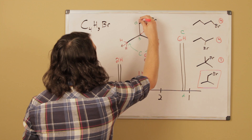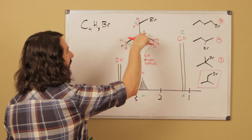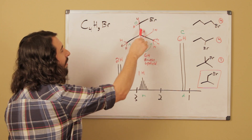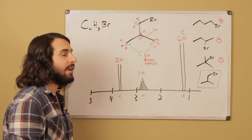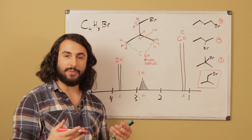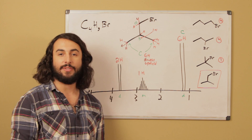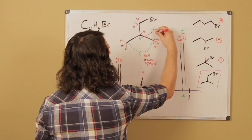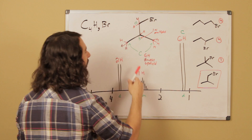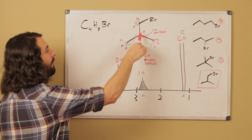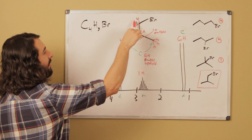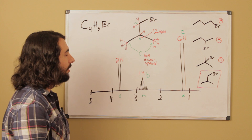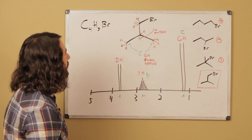Now let's look at the CH proton at position B. First, it integrates to 1 because there's only one of them. In terms of splitting, it has many neighboring protons: two on the CH2 and three on each methyl group, for a total of eight neighboring protons. That gives a very complicated splitting pattern, which we simply call a multiplet. In terms of chemical shift, it's closer to the bromine than the methyl groups but further away than the CH2, so it falls in the middle. All of that corroborates that this peak corresponds to proton B.